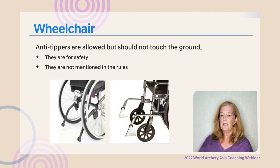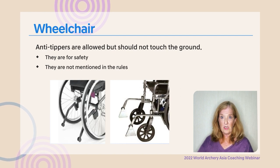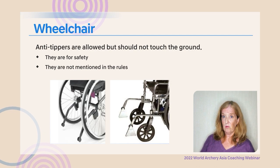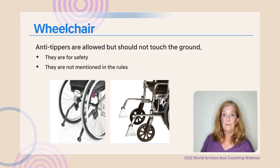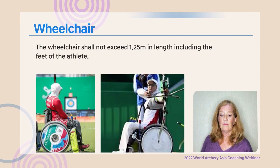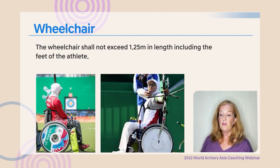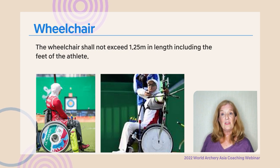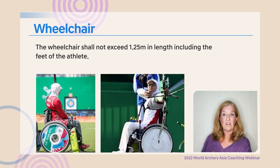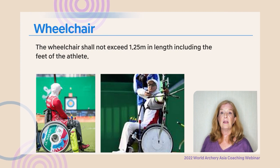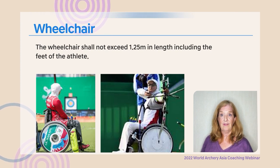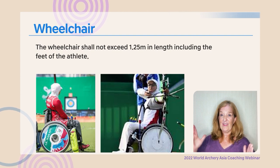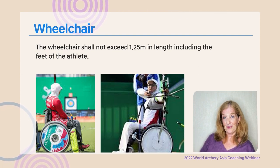Anti-tippers are allowed on a wheelchair but should not be touching the ground — they are there for safety and are not mentioned in the rules but are permitted. Wheelchairs must not exceed 1.25 meters in length including the athlete's feet, so judges will measure from whatever sticks out farthest in front to whatever sticks out farthest in back — typically the feet in front and the back wheel.